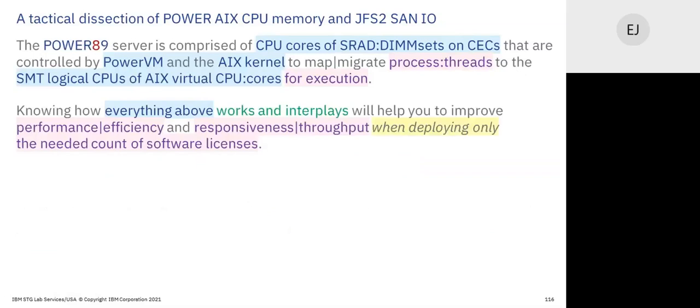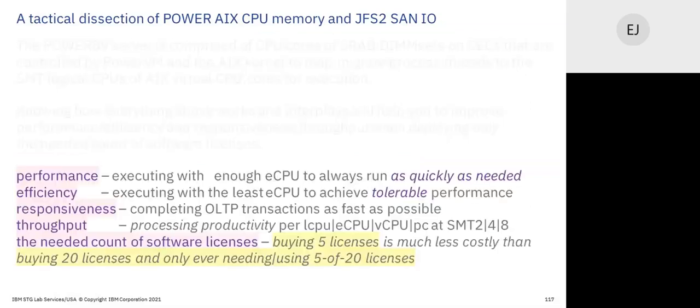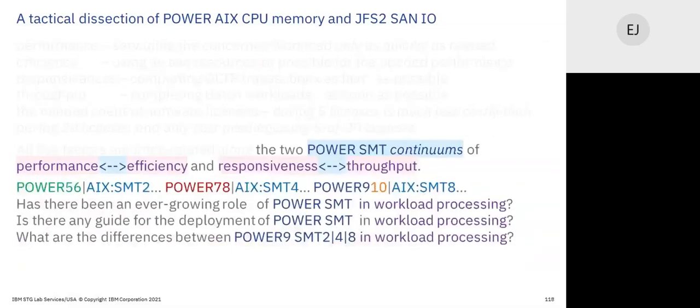We're going to show what the hardware is, and in the next session how threads are mapped for execution on the hardware. We have two additional continuums based on SMT, and both continuums just grew wider because SMT8 makes them wider. Linux on Intel only has hyperthreading — there is no such reality as hyperthreading beyond two. We have that additional complexity for the greater exploitation of our hardware per workload.